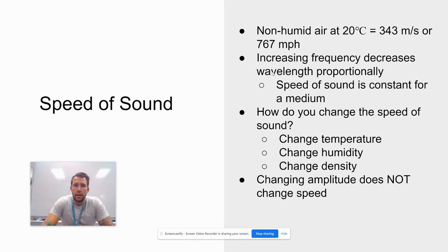Let's talk about speed of sound. The speed of sound for a given material is pretty much constant the whole time, unless there's a few ways to change it. For non-humid air at 20 degrees Celsius, it's 343 meters per second or 767 miles per hour, which is pretty dang fast. But we're going to see that there are a couple ways of changing the speed of sound.